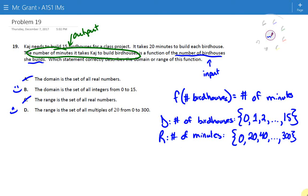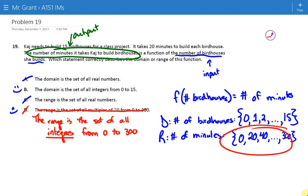However, this problem has a typo. So, whoopsie, D is actually supposed to say the range is the set of all integers from 0 to 300, which is incorrect because it's not just integers.